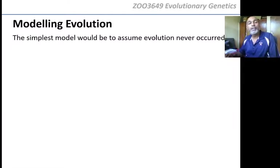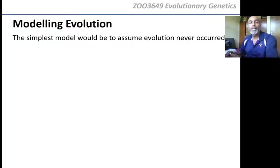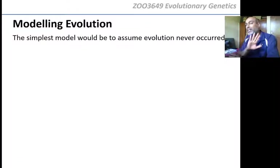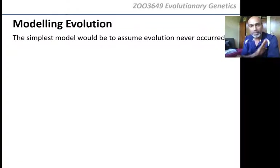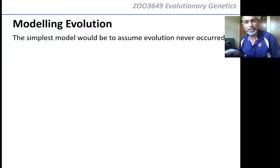The simplest model — which is what a null model is — would be to assume that there is no evolution. Just assume that evolution doesn't happen. This is the way that half of South Africa thinks anyway. So let's start with that — that's a good starting point because most people believe that.